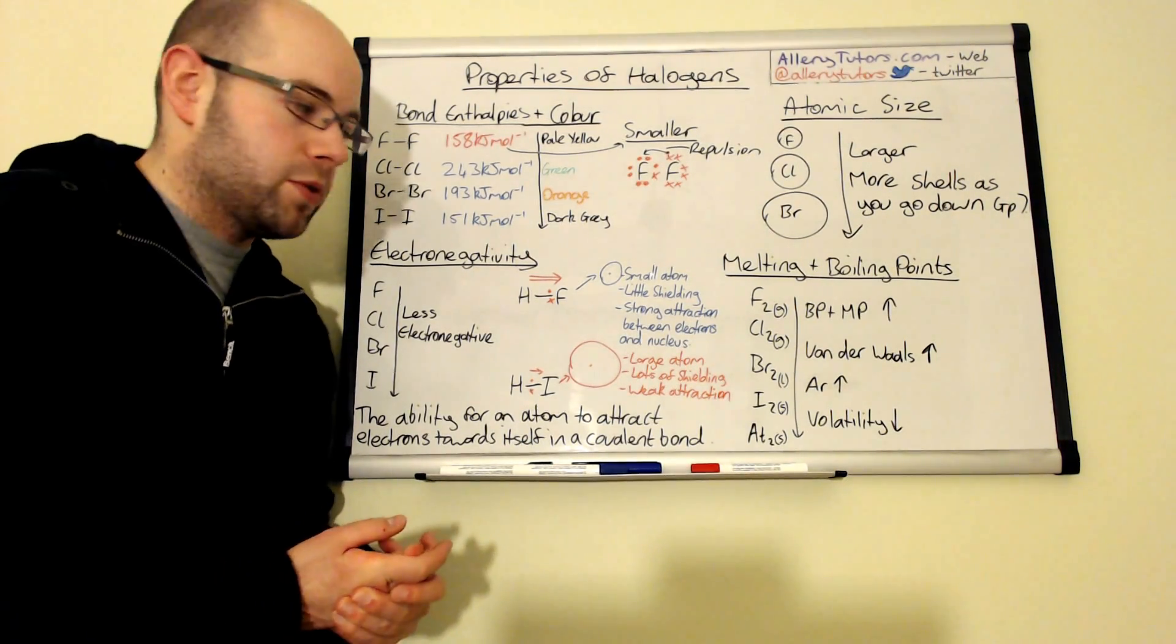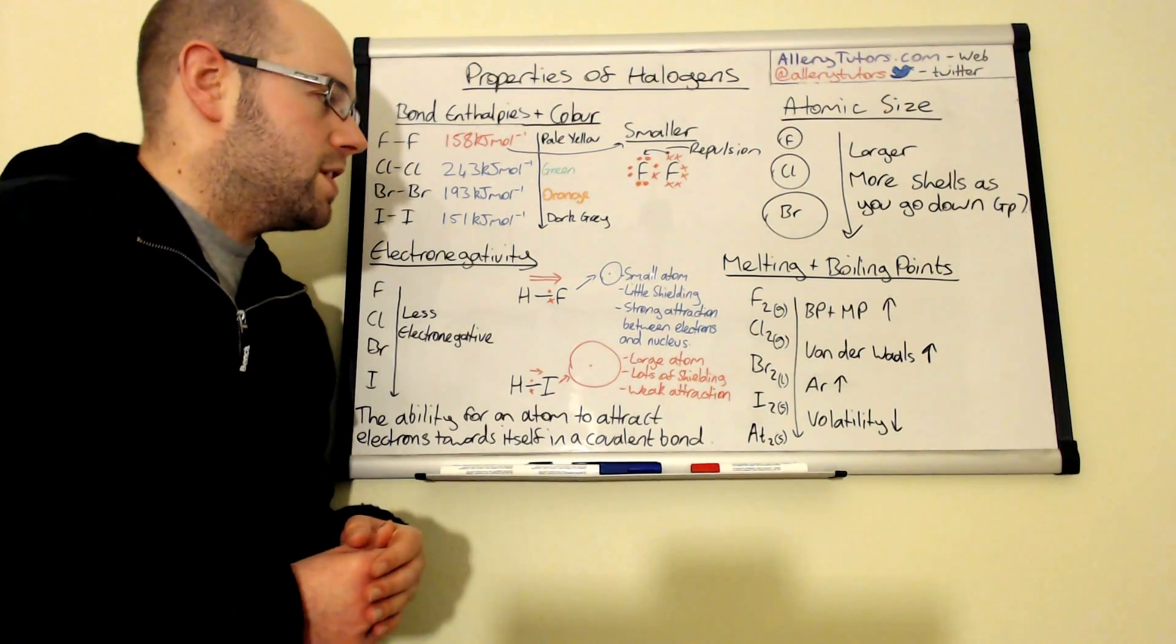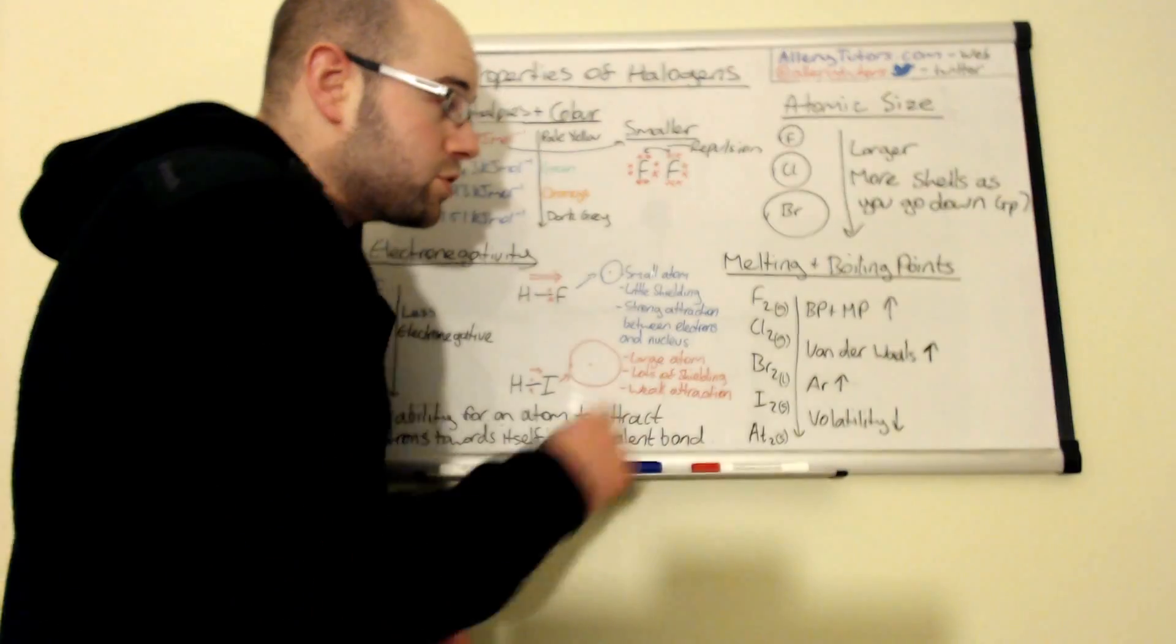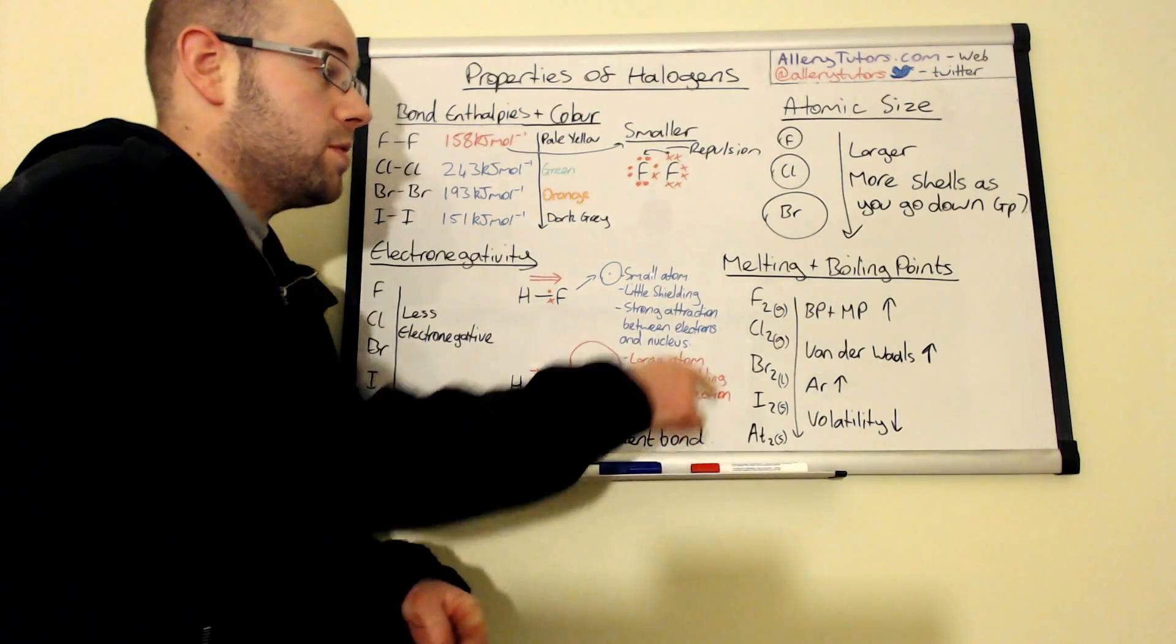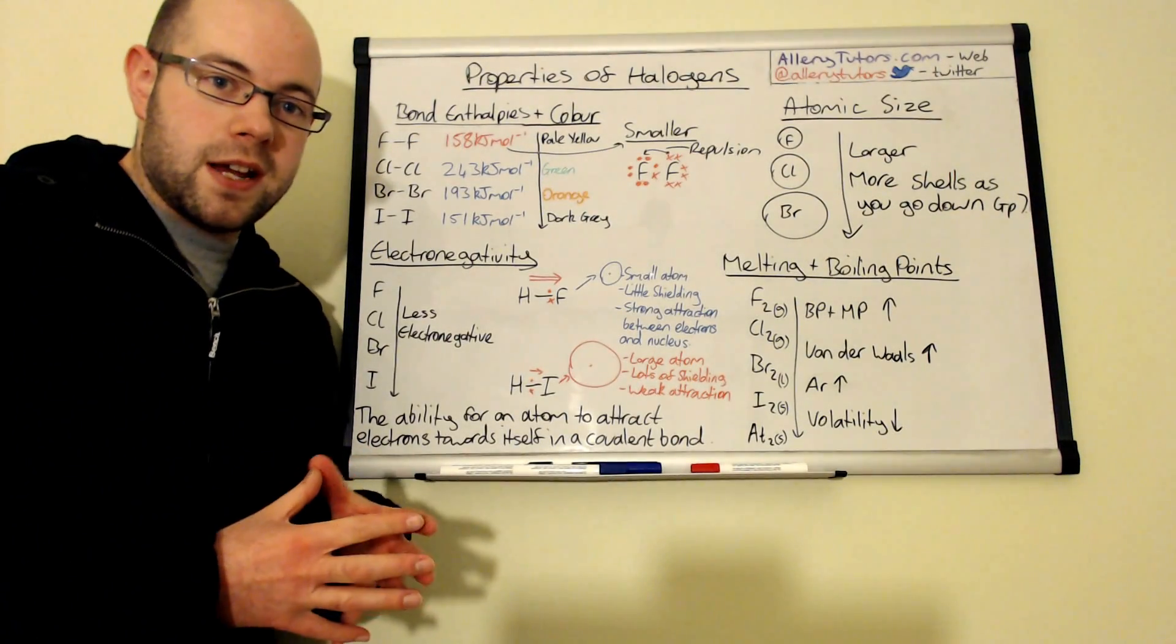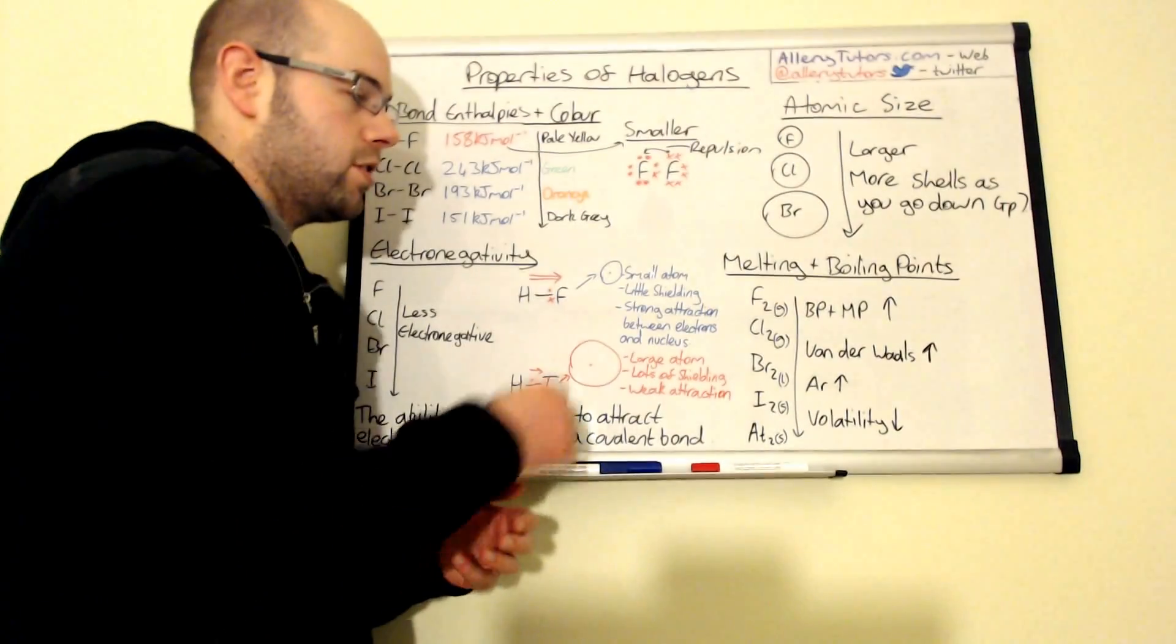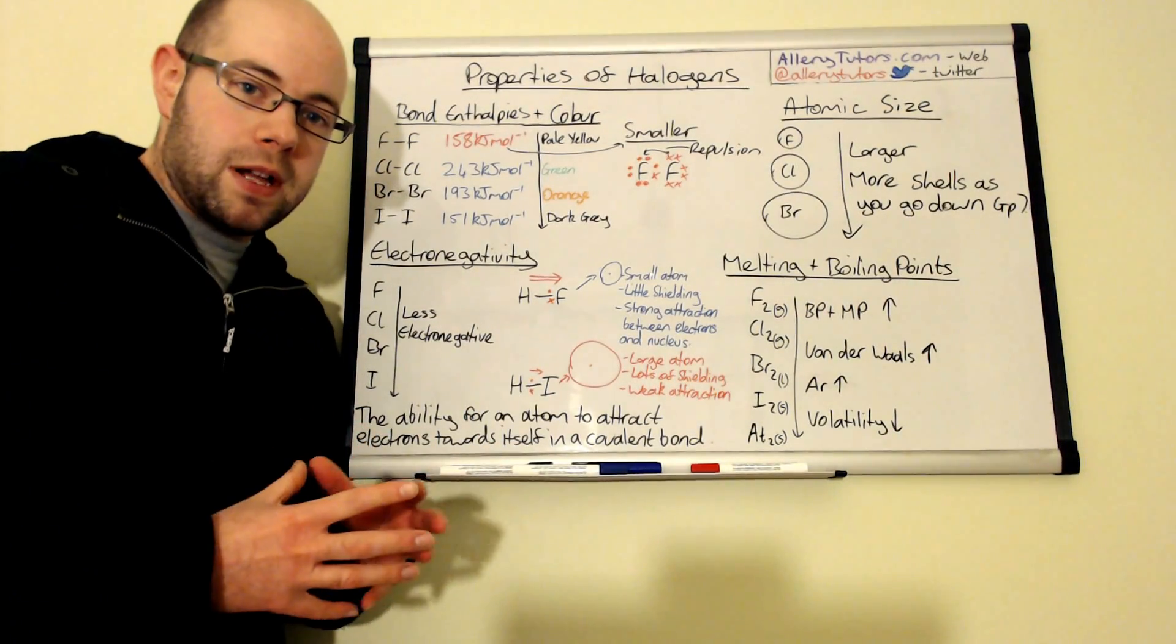Now just another thing as well is that as you notice I'll put the state symbols on here as well and now this is the state of these elements at room temperature and pressure and fluorine and chlorine are both gases low melting points low boiling points and so that means that they are gases at room temperature.